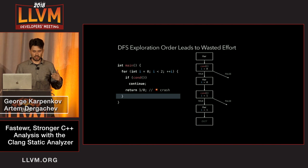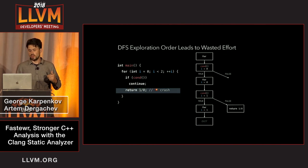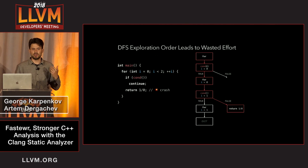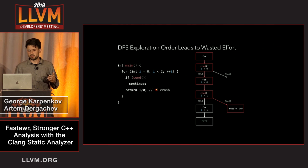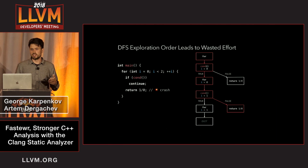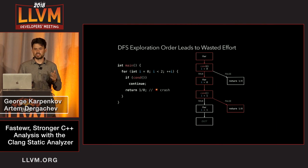That actually lets us find the bug — if the program goes along this path, division by zero happens. But notably, we did not need to go through the loop twice to get there. It was actually possible to get there on the first iteration. So something is not quite right; we're wasting effort in order to generate that bug report.